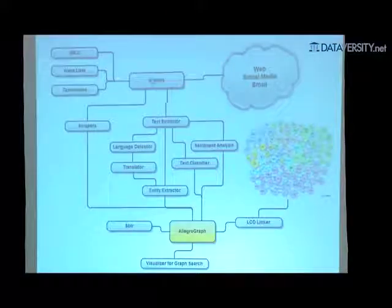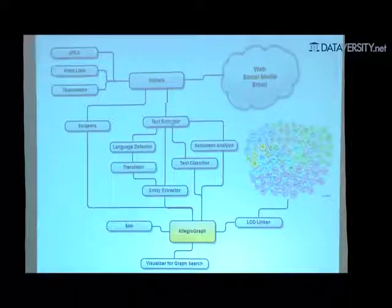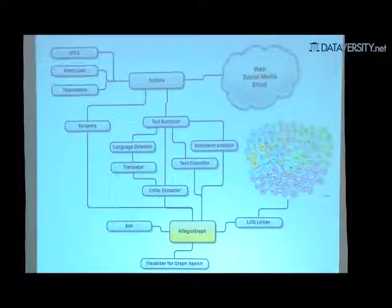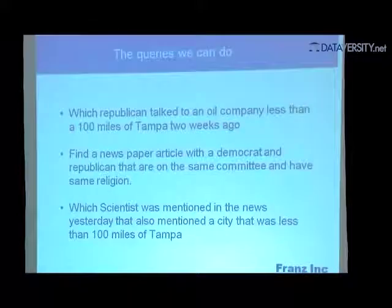This is the architecture we use: we have spiders we can control with URLs, word lists, or taxonomies. We get information from the web, apply text extractors or scrapers, extract places, organizations, and people, and store them in our database. We link it to the Linked Open Data Cloud, put it in Solr for special indexing, and then you can show and query your data with our visualization tool.